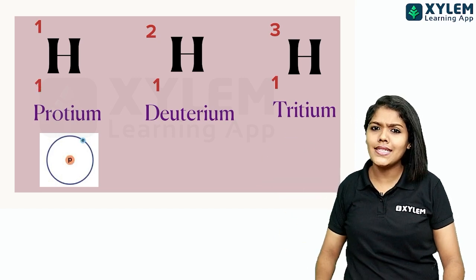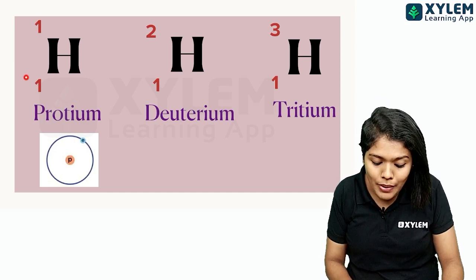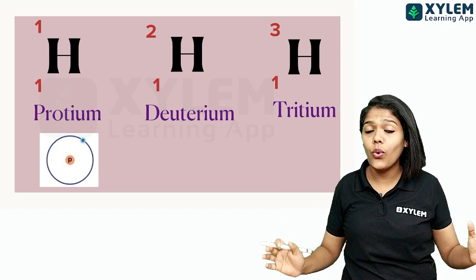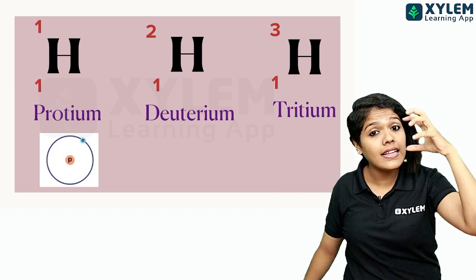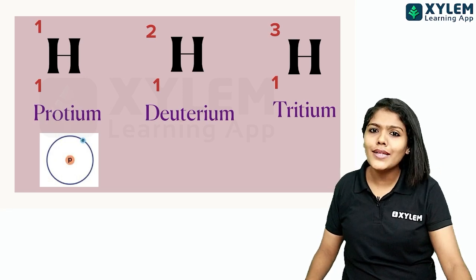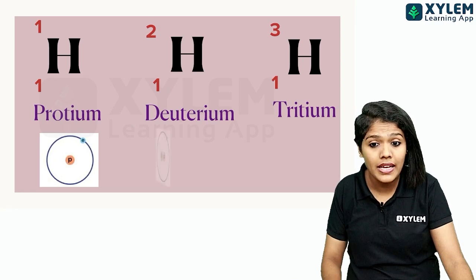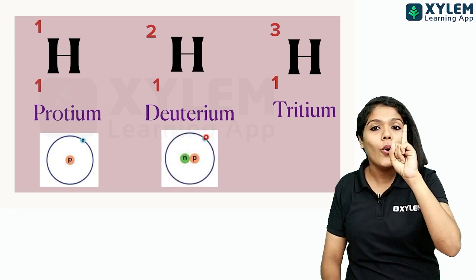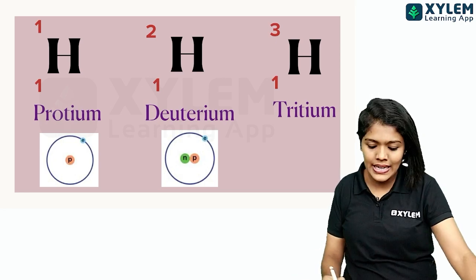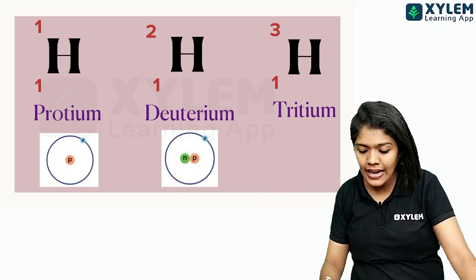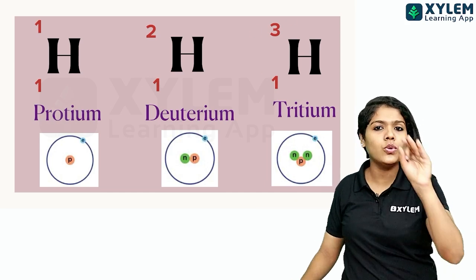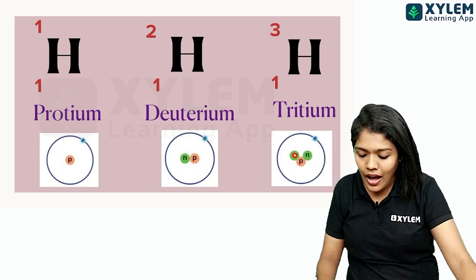We calculate neutrons as: mass number minus atomic number. For H-1-1: neutrons = 1 − 1 = 0. For H-1-2: neutrons = 2 − 1 = 1. For H-1-3: neutrons = 3 − 1 = 2. Atomic number is the same for all three, equal to 1, meaning 1 proton and 1 electron. But the number of neutrons is not the same.